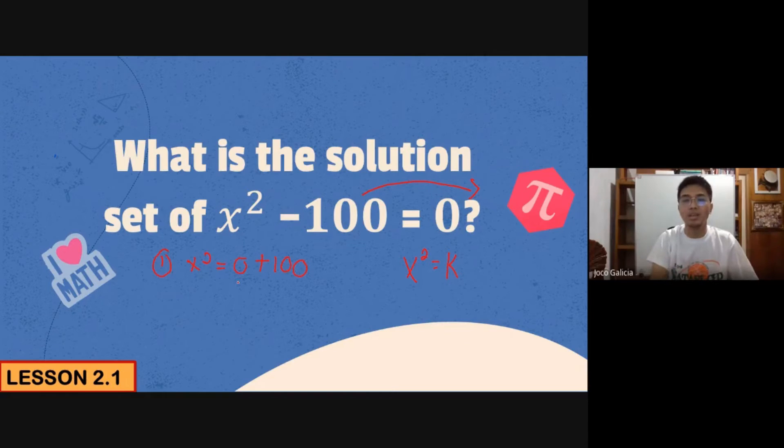Then after that, let's have our second step. Copy x², then evaluate 0 + 100. Of course, this is 100. Then the third step will be: x² copy lang din ulit muna class.